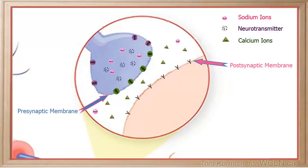As sodium ions flood into the axonal bulb, gated calcium ion channels also open, and calcium ions are allowed to enter the cell. The calcium ions stimulate contractile proteins to pull the neurotransmitter vesicles to the presynaptic membrane.